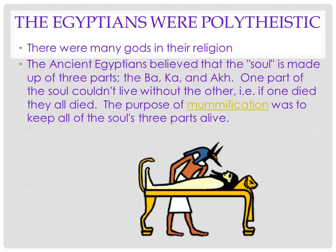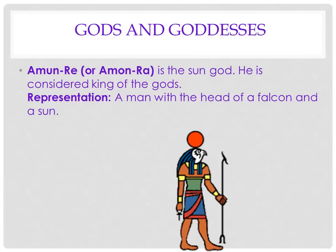The ancient Egyptians were polytheistic, meaning they had many gods and goddesses. Here you can see Amun-Ra, the sun god, depicted with the head of a falcon and a sun.